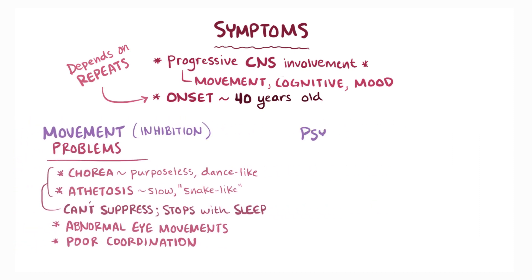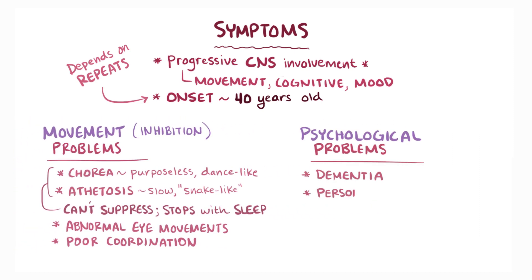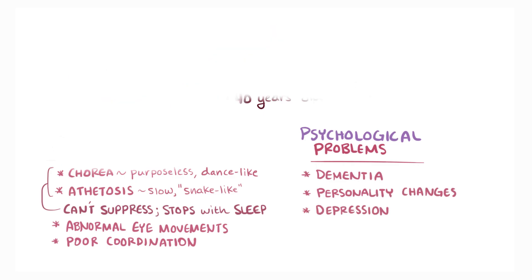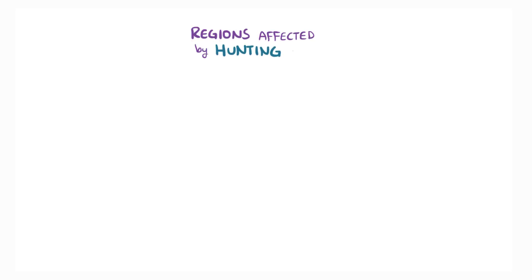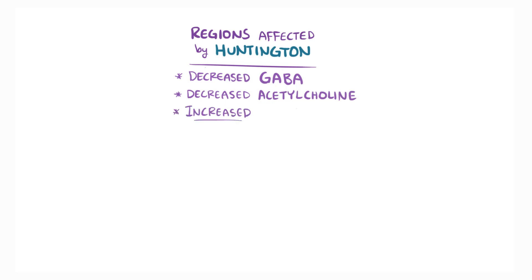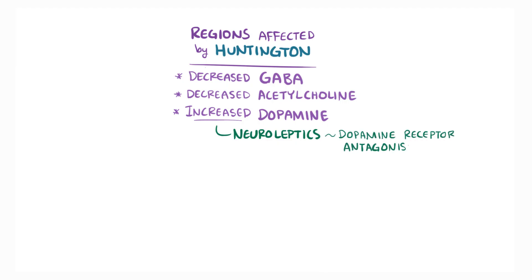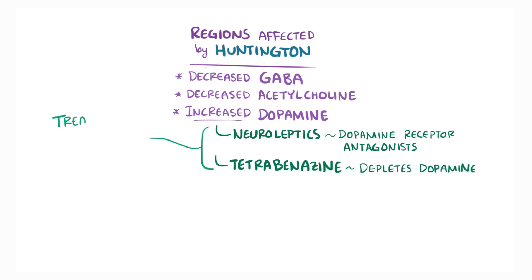Loss of tissue in these regions can also lead to psychological problems as well, like dementia, personality changes, and depression. The brain regions affected by Huntington disease have decreased GABA and acetylcholine, and increased dopamine levels. This increased dopamine helps explain why neuroleptics, which are dopamine receptor antagonists, and tetrabenazine, which depletes dopamine, are used to treat chorea in people with Huntington disease.